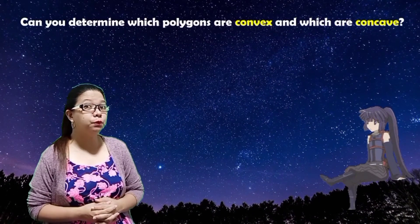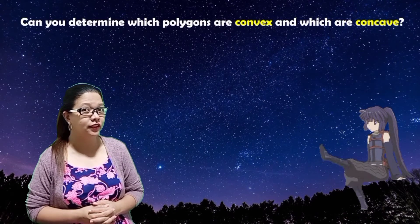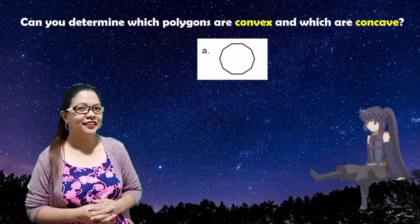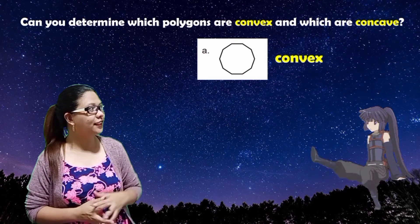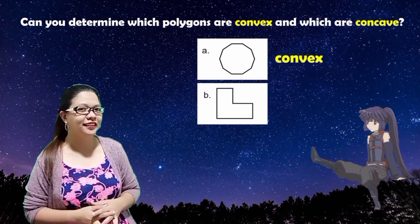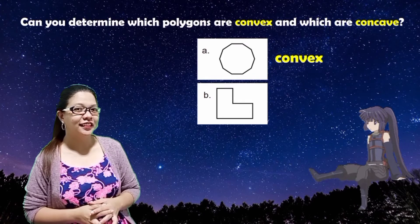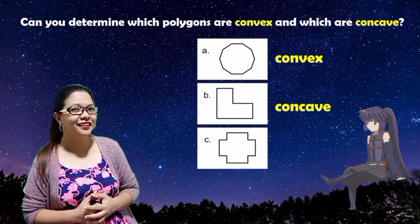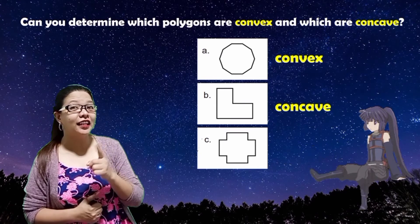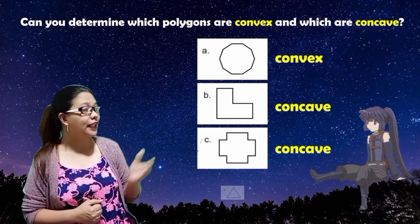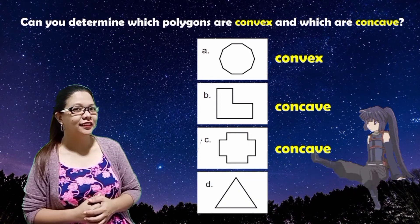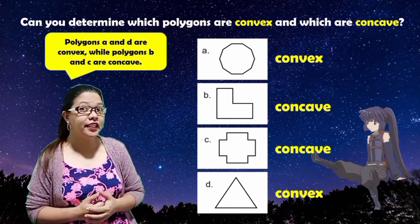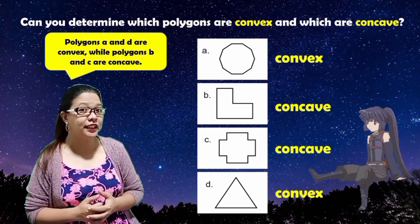Can you determine which polygons are convex or concave? Figure A — that is convex. Figure B — that is concave. Figure C — that is concave. And Figure D — that is convex. Polygons A and D are convex, while polygons B and C are concave.